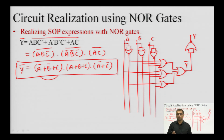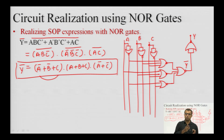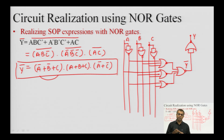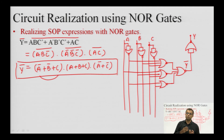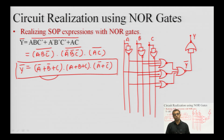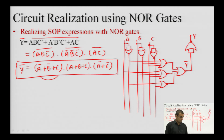To summarize: AND-OR structures and SOP expressions are equivalent to NAND-NAND structures; OR-AND structures and POS expressions are equivalent to NOR-NOR structures. This is how we prepare circuits using basic gates, NAND gates, and NOR gates. With this, we come to the end of this lecture. Thank you very much.